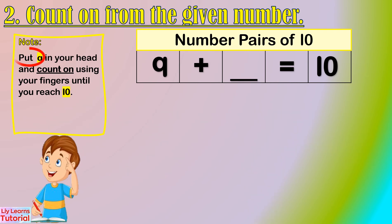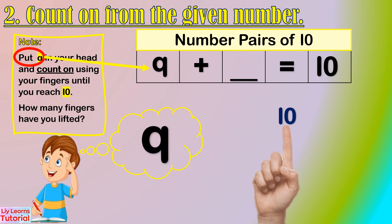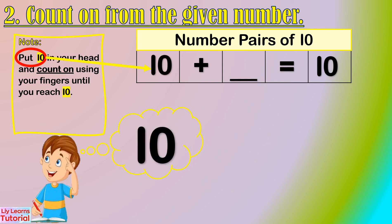Let's start from 9. Hold 9 in your head, then count on: 9, 10. How many fingers have you lifted? Just 1 finger. So the number pair of 9 is 1. Let's start from 10 — we already reached the maximum number, so no need to count on. That means the number pair of 10 is 0.